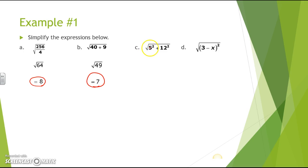The next one, we have the square root of 5 squared plus 12 squared. 5 squared is 25, and 12 squared is 144. Now you add them together to get the square root of 169. The square root of 169 is 13.